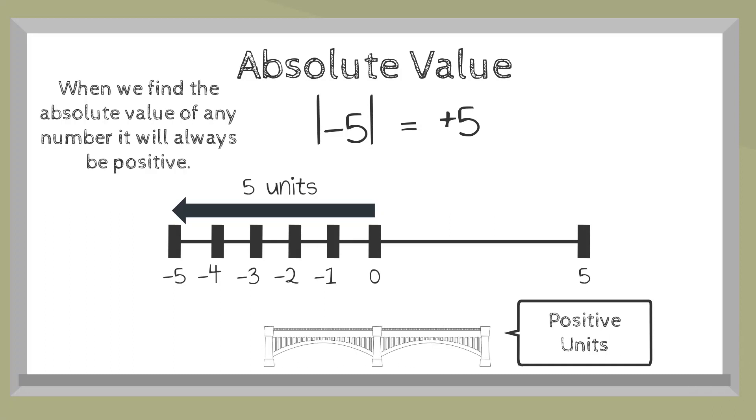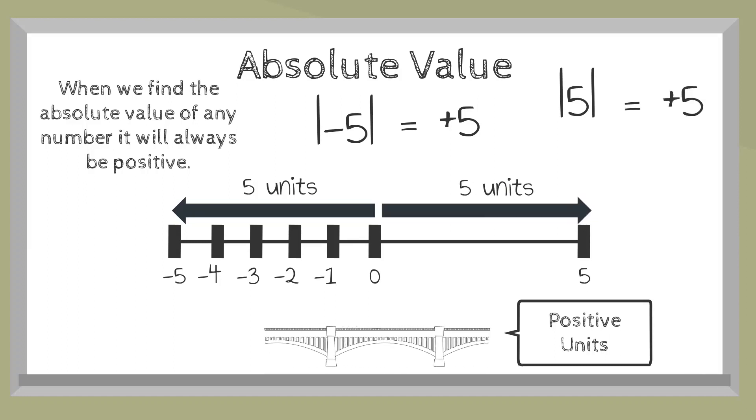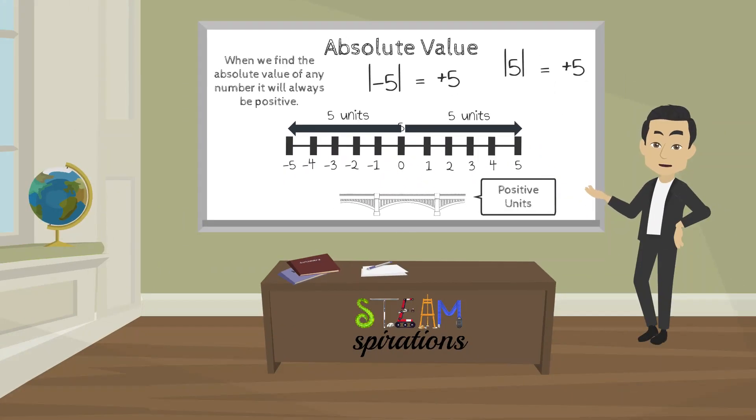If we were to be asked to find the absolute value of the number 5, it would also be positive 5 because it is 5 units away from 0. Let's look at a few more examples.